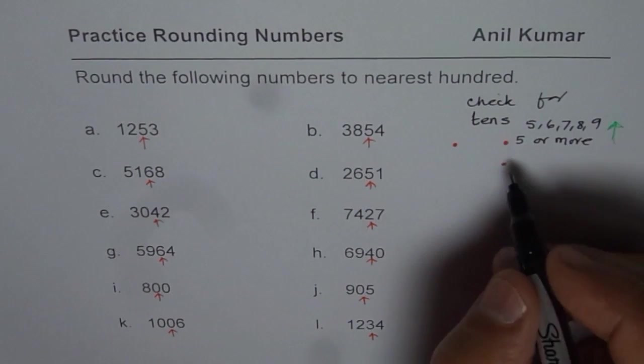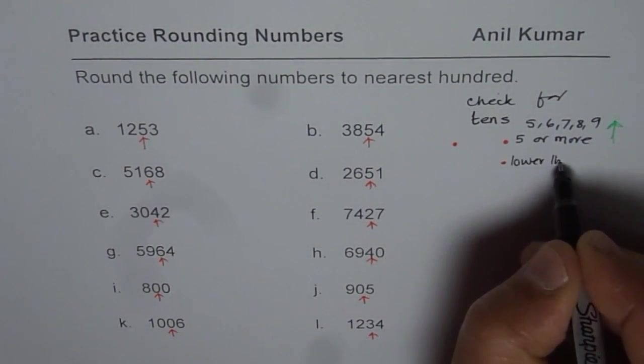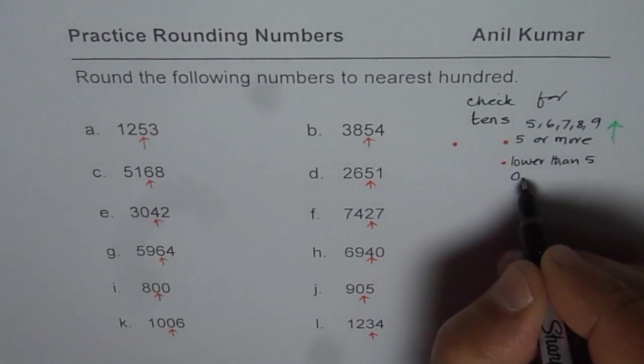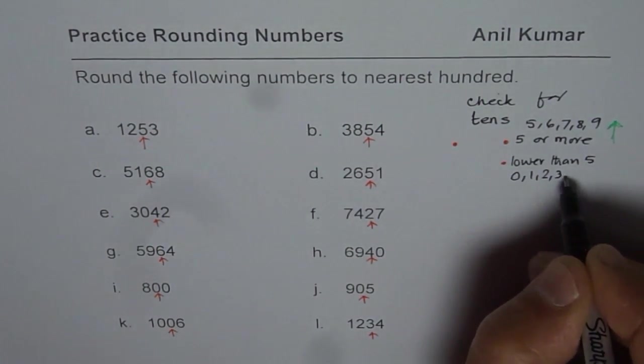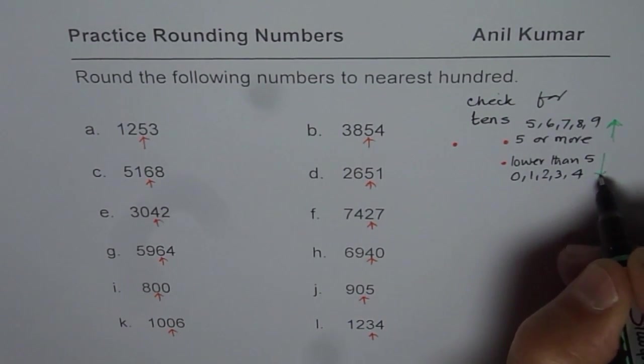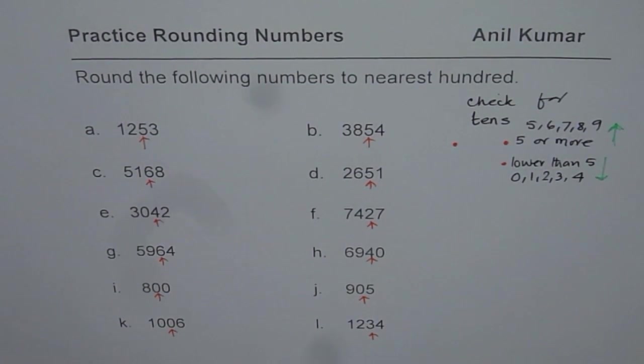If it is lower than 5, that is to say the number could be 0, 1, 2, 3 or 4. In that case, you round lower. So take the lower number.